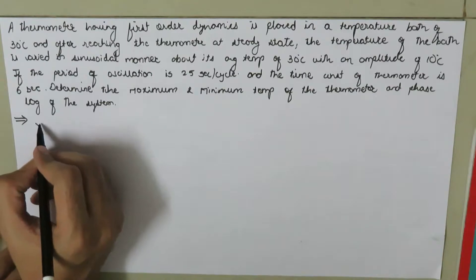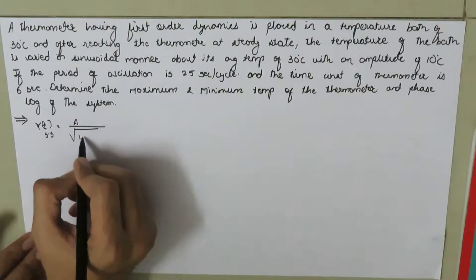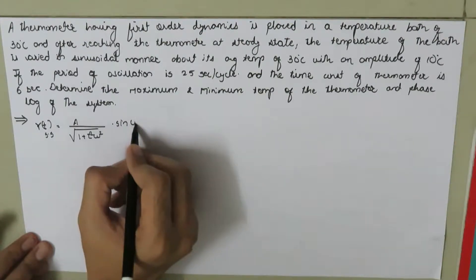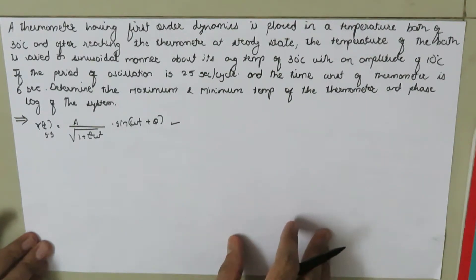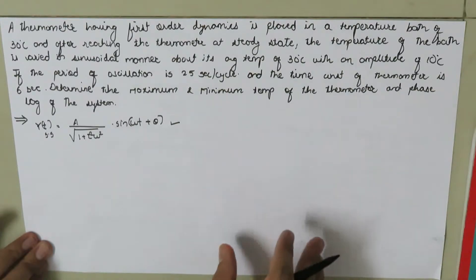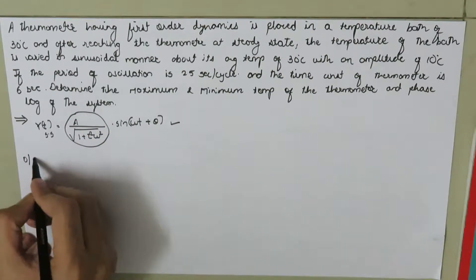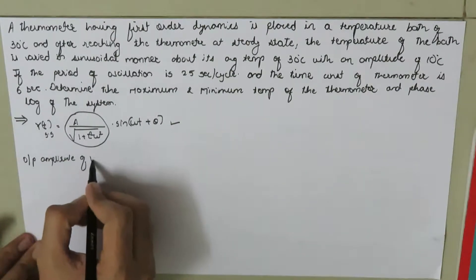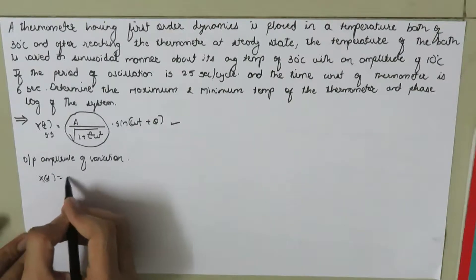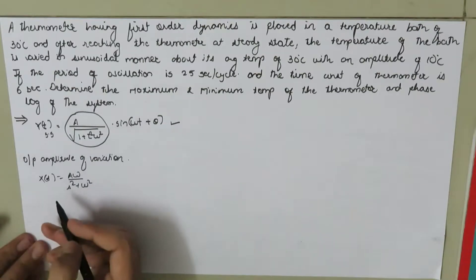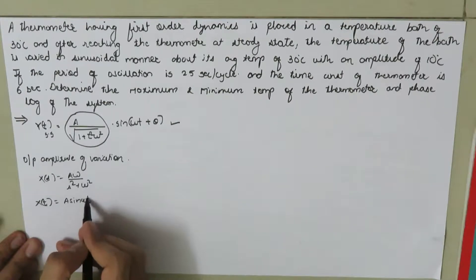In the case of the sinusoidal response equation, the response at steady state is given as: y(t) at steady state equals A divided by the square root of (1 plus tau squared omega squared), times sine of (omega*t plus theta), where theta is the phase angle. This term is called the output amplitude of variation. This equation is derived by taking x(s) equal to A*omega divided by (s squared plus omega squared), and taking the inverse Laplace transform to get x(t) equal to A*sine(omega*t), where A is the input amplitude of variation.